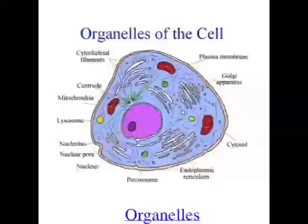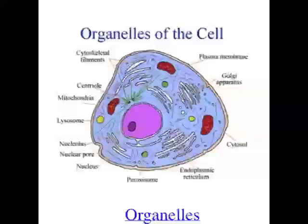Something that holds all of those things in the cell is the plasma membrane. It surrounds the cell and keeps all the contents separate from the environment. It's composed of a phospholipid bilayer, meaning it's made of lipids or fats — two layers of fats. It also has embedded proteins and some carbohydrate chains poking out of it, as well as cholesterol molecules for structure and stability. That's the plasma membrane, which holds all those organelles inside the cell.